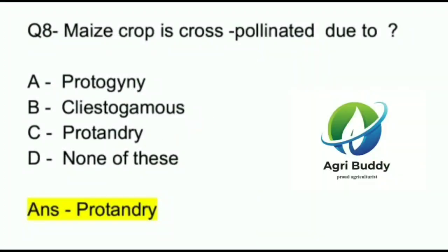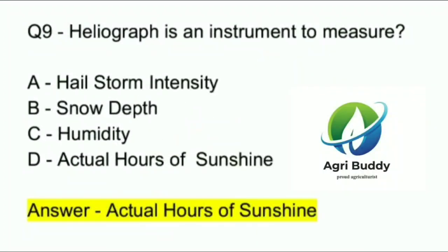Question 9. Heliograph is an instrument used to measure? A. Hailstorm intensity. B. Snow depth. C. Humidity. D. Actual hours of sunshine. And the answer is Actual hours of sunshine.